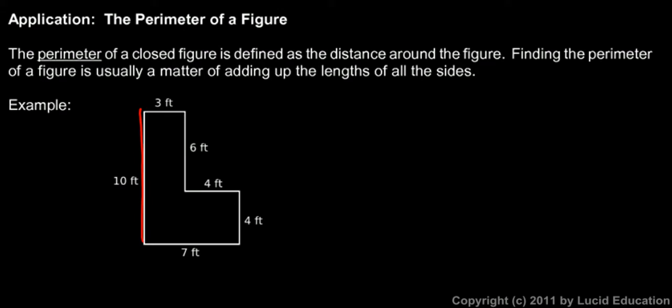So we have 10, and then 3, and 6, and 4, and 4, and 7. So the perimeter of the figure would be 10 plus 3 plus 6 plus 4 plus 4 plus 7.